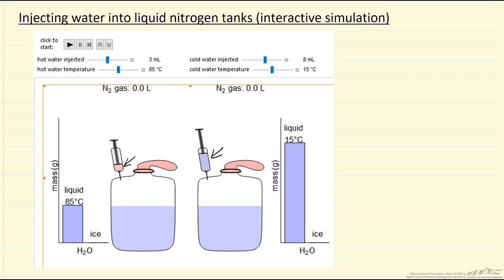And the tank on the left, we add water that's relatively warm. In this case, we picked 85 degrees C, and the bar graph shows the relative amount of water we added.